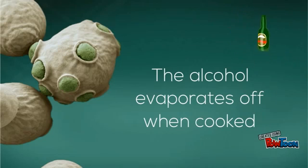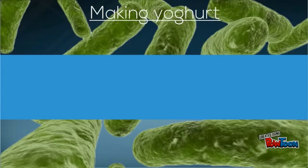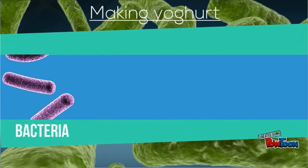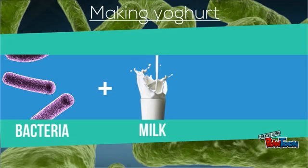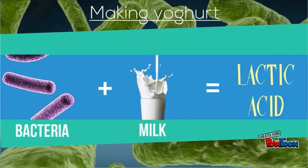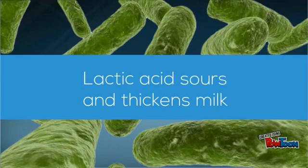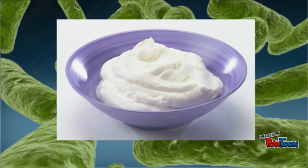By adding bacteria to milk we can make yogurt. The bacteria feed on the lactose sugar in the milk to make lactic acid. This lactic acid thickens the milk and makes it sour, to give yogurt its characteristic taste and texture.